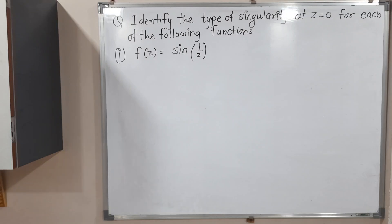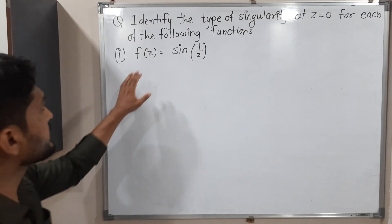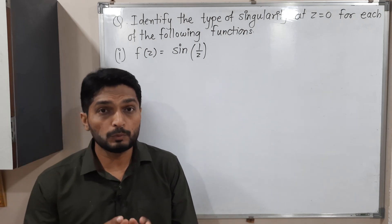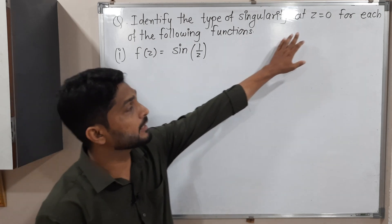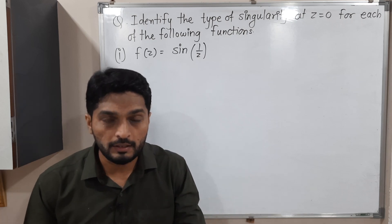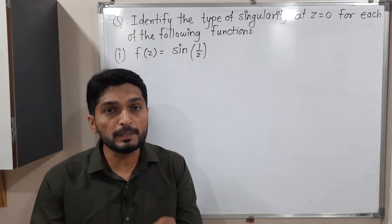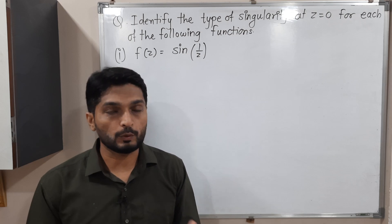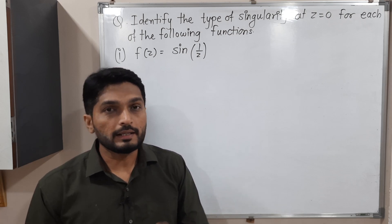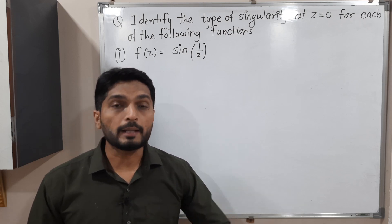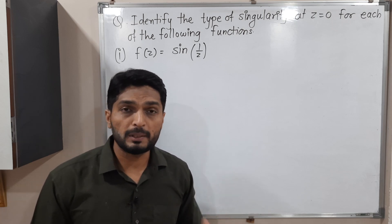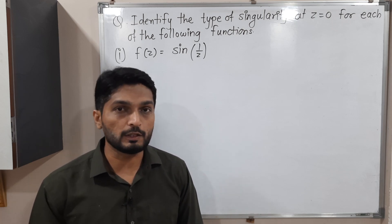Hi everyone. Let us discuss this example. So in this example, we will have two functions and we have to prove that Z is equal to zero is a singularity — it is a singular point. We simply have to find its type: which type of singularity is this one? Let us recall the types of singularities first. We have already seen this in our previous video, but let us recall all these things and then we will go further.